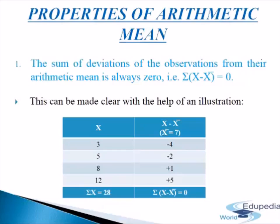This can be made clear with the help of an illustration. As we can see in the table, in the first column, variables are written denoted by x: 3, 5, 8, 12. After adding up the variables, we get sigma x which is 28. The mean of the observation is 7. In the second column, we deduct the arithmetic mean from the variables: 3 minus 7 gives minus 4; 5 minus 7 gives minus 2; 8 minus 7 gives 1; and 12 minus 7 gives 5. After adding these up, we get 0. This shows that the sum of deviations of the observations from their arithmetic mean is always 0.